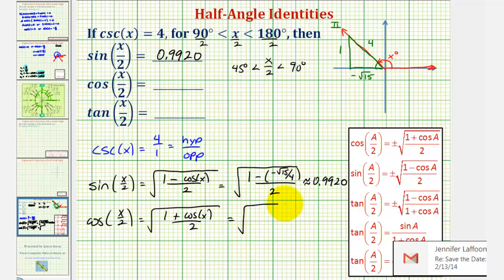We'd have the square root of one plus negative square root 15 divided by four, all over two.